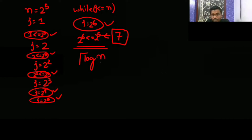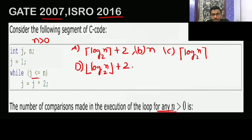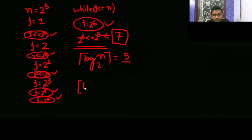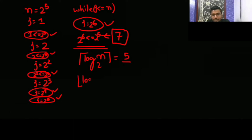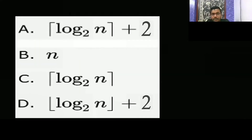So this condition also you need to count. Now which option is satisfying this? If you take ceiling of log n base 2 plus 2, and option D says floor of log n base 2 plus 2. When n is a power of 2, floor and ceiling give the same value, so both options A and D give 5 plus 2 equals 7. These two options give the same answer in this case.